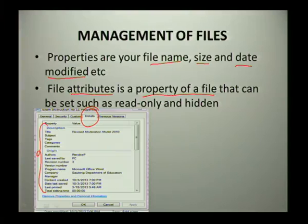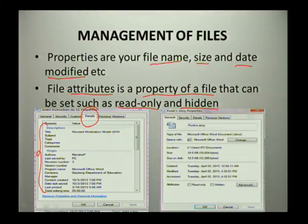Then we have file attributes. File attributes are properties of a file that can be set, such as read only as well as hidden. This picture shows you that under file properties, under General, you can see the read only and hidden options.